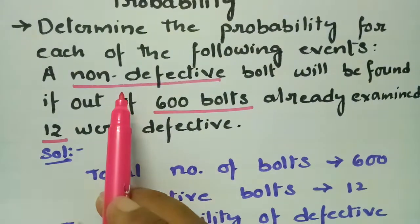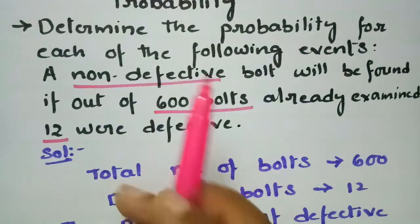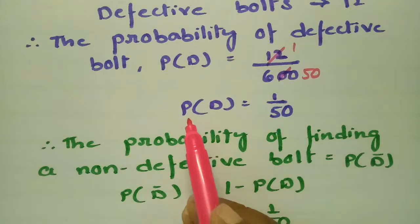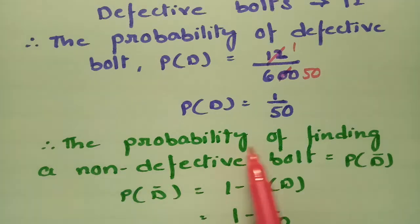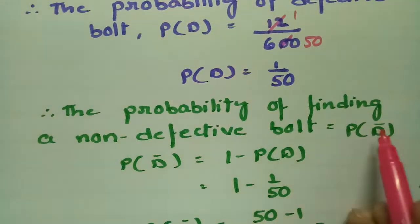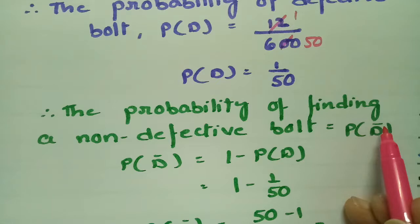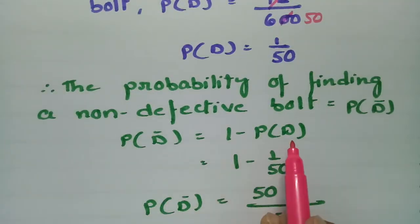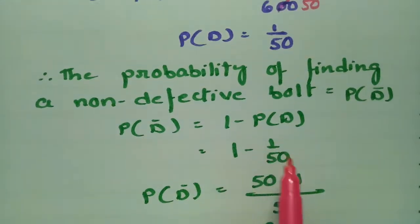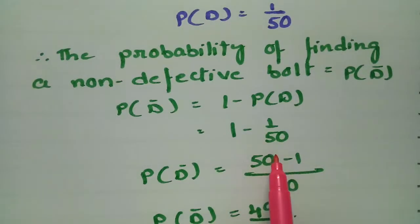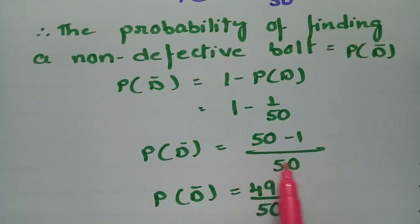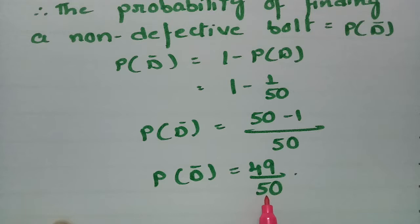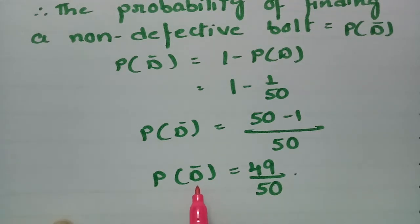Now we need the probability of getting a non-defective bolt. The probability of a non-defective bolt is the complement, P(D'). P(D') is equal to 1 minus P(D), that is 1 minus 1 by 50. Taking 50 as LCM, this is 50 minus 1, which equals 49 by 50. Therefore the probability of getting a non-defective bolt out of 600 bolts is 49 by 50.